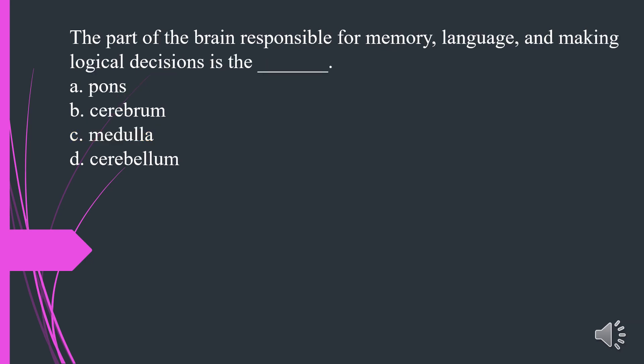The part of the brain responsible for memory, language, and making logical decisions is the? A. Pons. B. Cerebrum. C. Medulla. D. Cerebellum. The answer is B. Cerebrum.